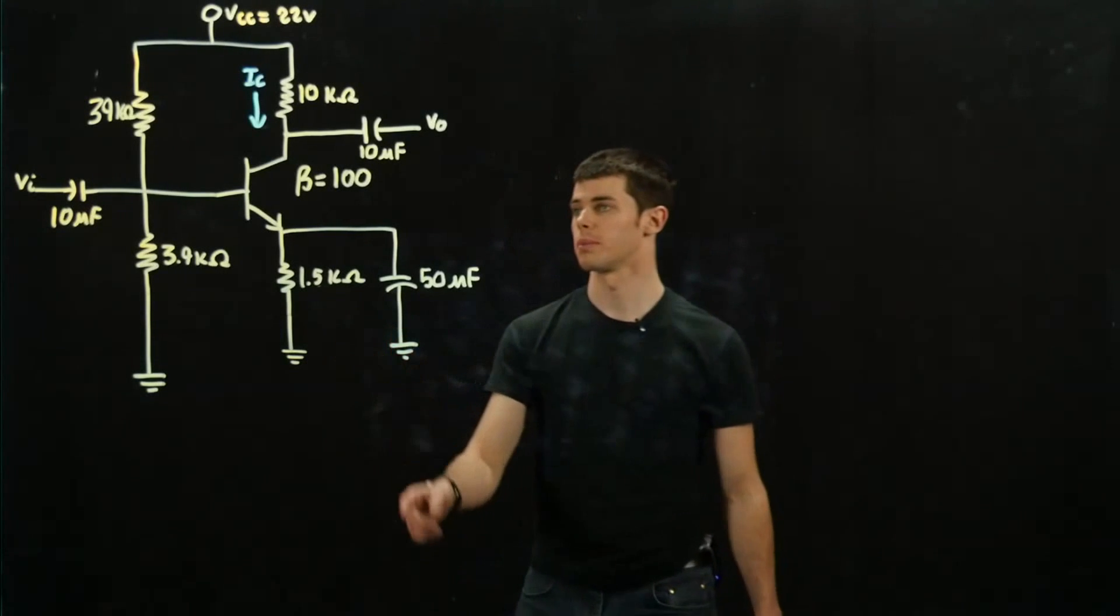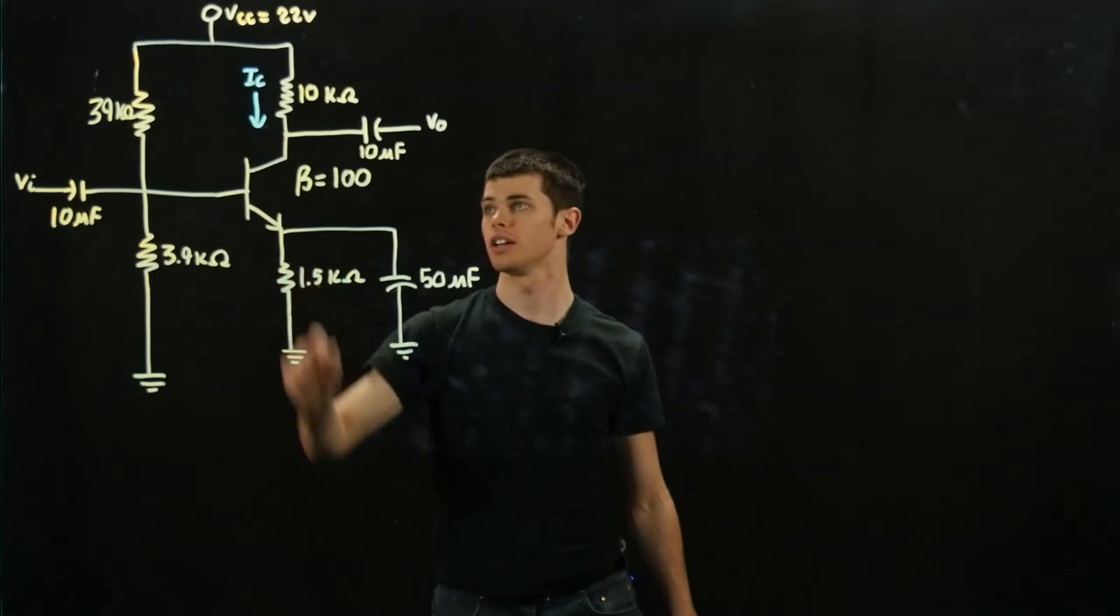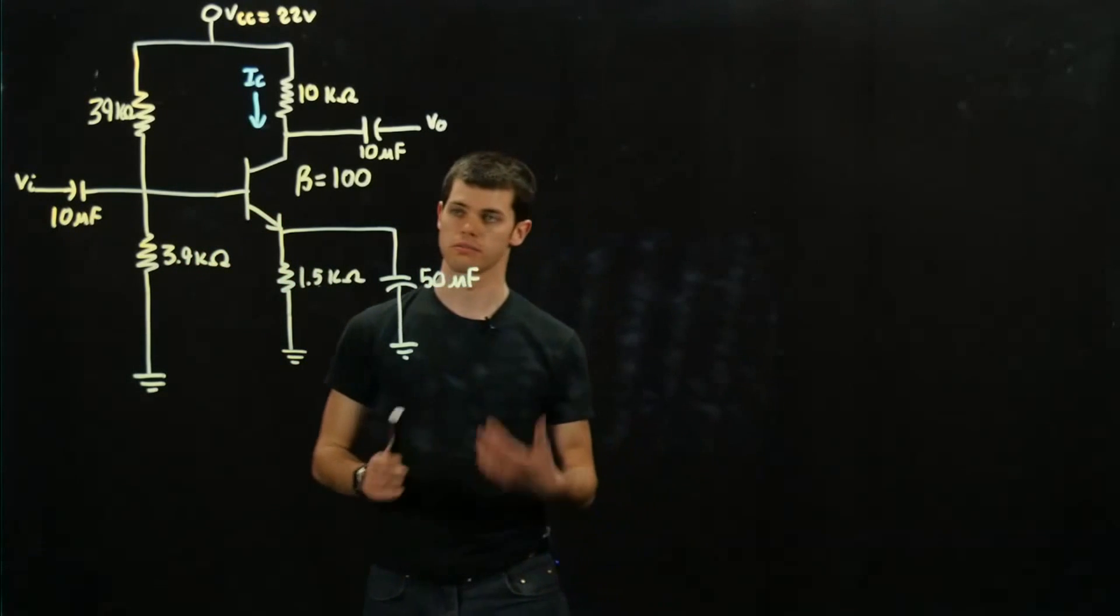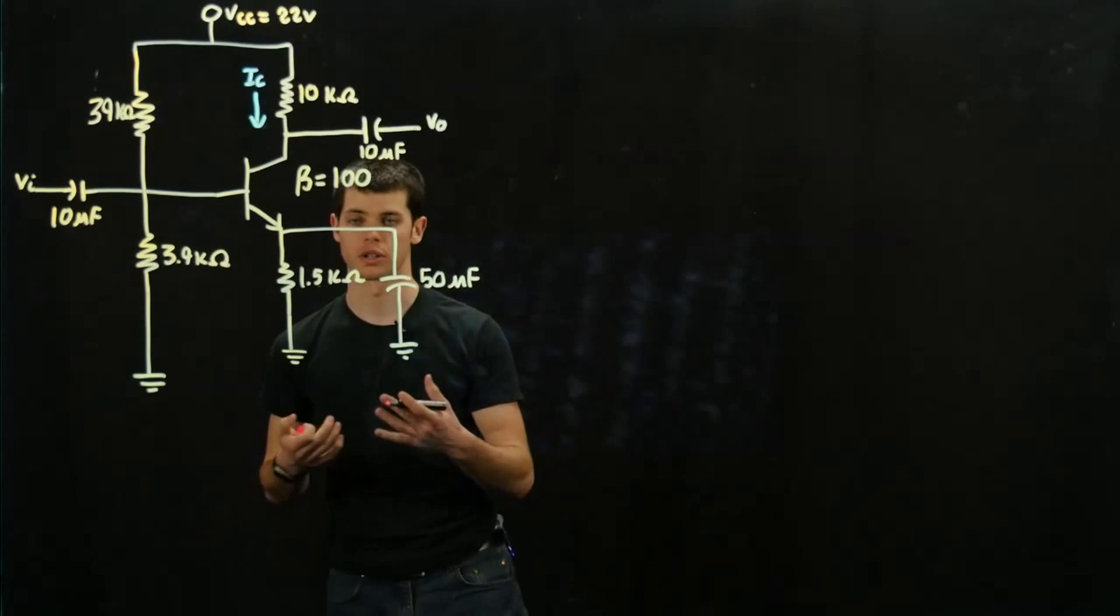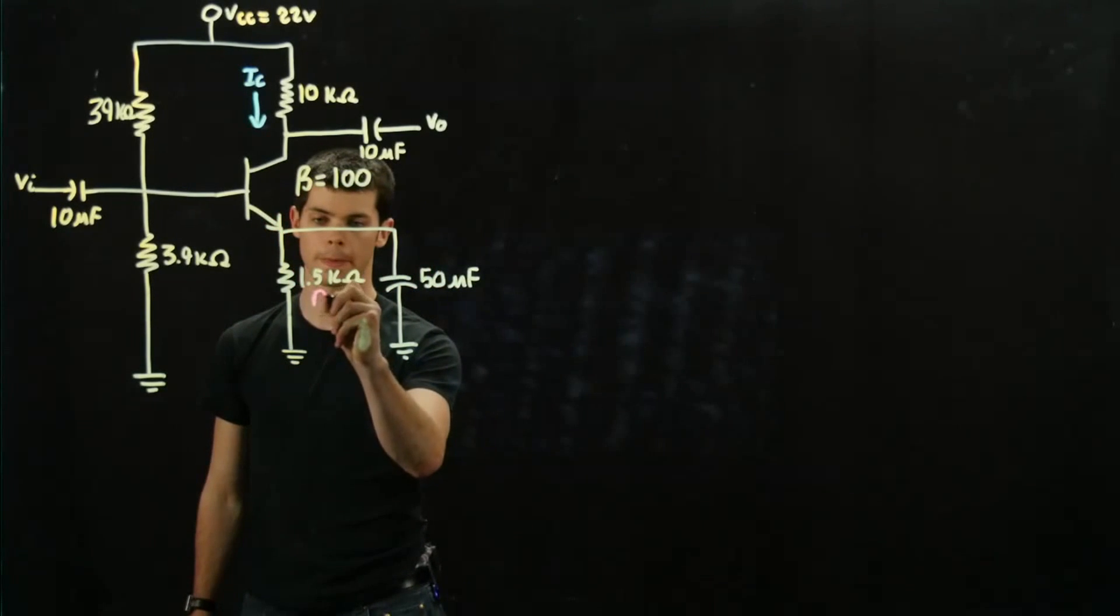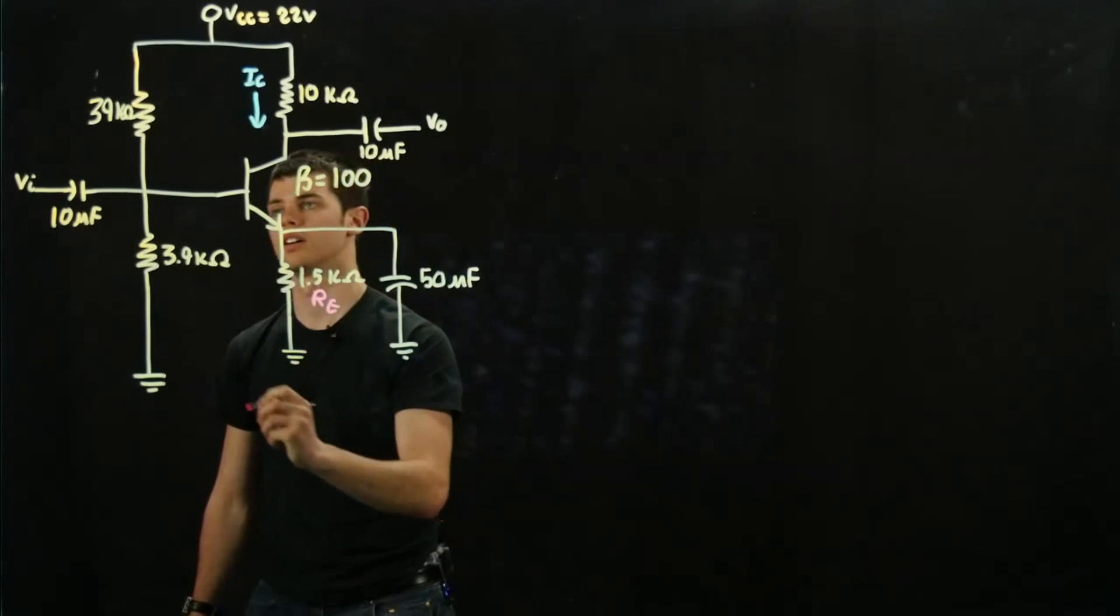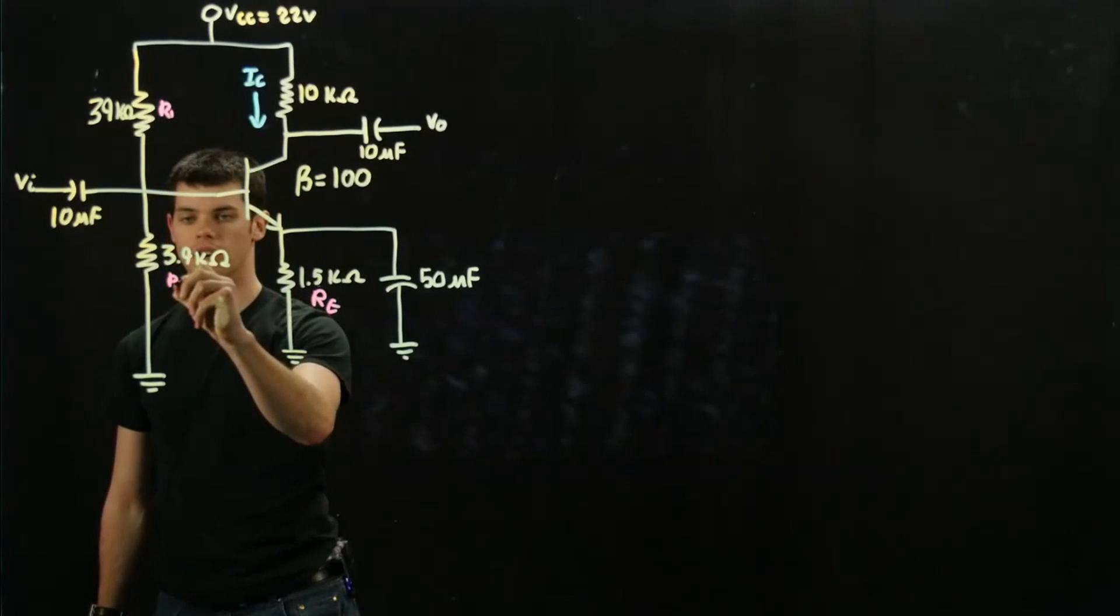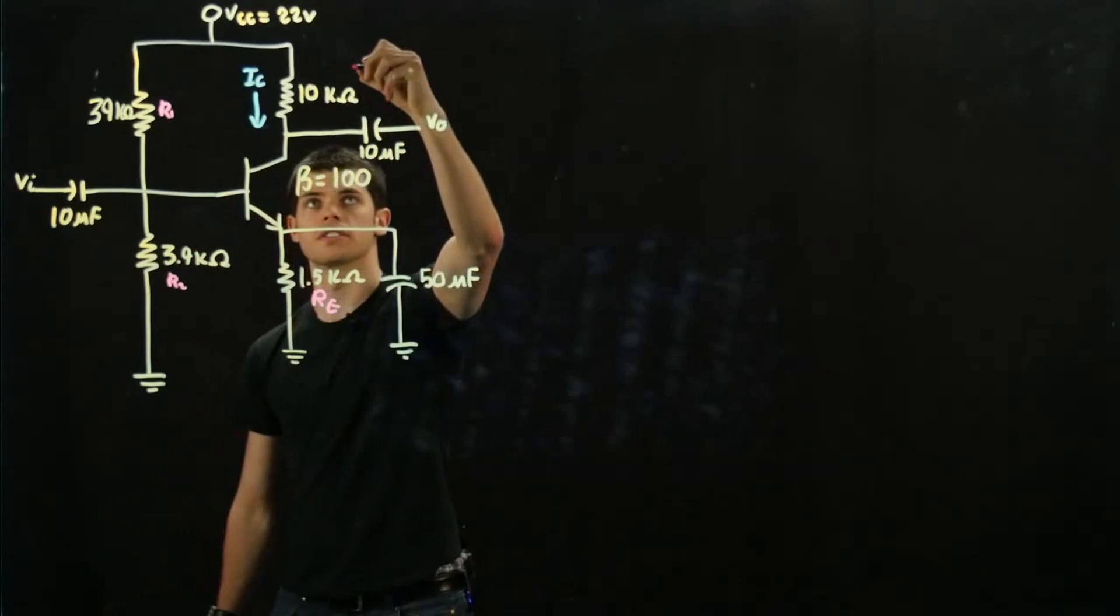For this particular problem, we have an NPN BJT and it is in a voltage divider formation. So what we're going to begin by doing is putting down some simple terms to help us out. This is going to be RE, this is R1, this is R2, and this is RC.